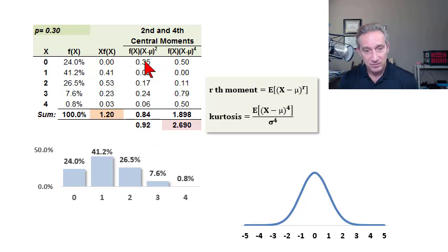So then I have the second and fourth moments. The second moment, of course, is going to lead to the variance. And here's our general form for the r-th moment. So for the second moment, we're just using r equal to 2. And for each value here, we have the probability, in this case, 24% multiplied by the difference between X and the mean, that difference raised to the second power, because we're doing the second moment.